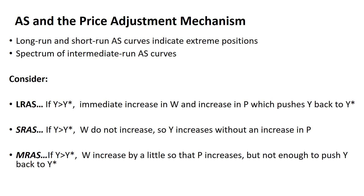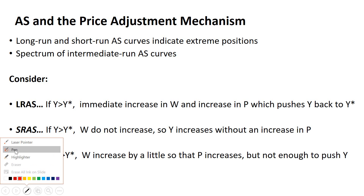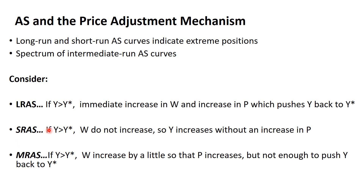With the long-run aggregate supply curve — the vertical aggregate supply curve — if the level of output exceeds potential output, this will result in an immediate increase in wages and increased prices, which will push output back to full employment. This is quite different to the short-run case, where wages don't increase, so output will increase without prices rising. In the medium run, there is both an adjustment in wages and prices, as well as in output.